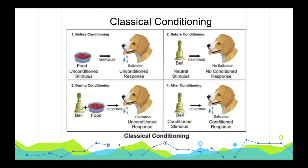First, let's talk about classical conditioning, pioneered by Ivan Pavlov in the 1920s. Pavlov, a Russian scientist, rang a bell every time he fed his dogs. After a while, the dogs began to salivate in response to the bell rather than the food. This is a simple example of classical conditioning.